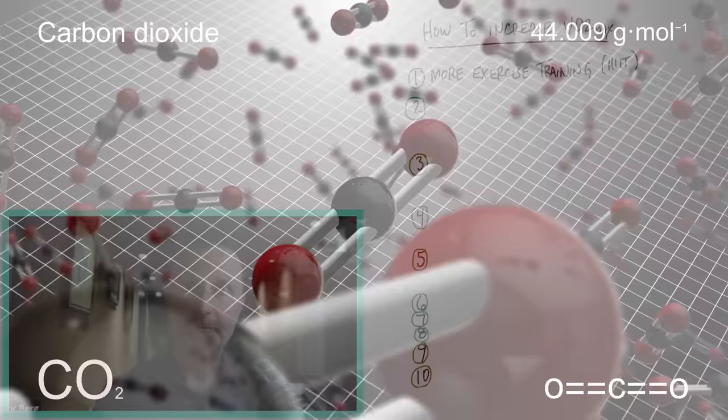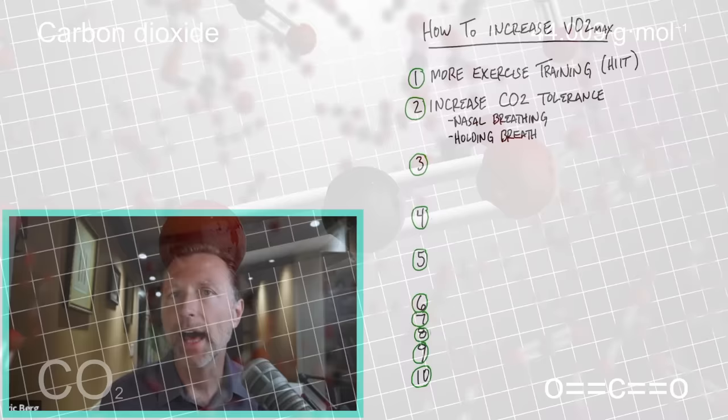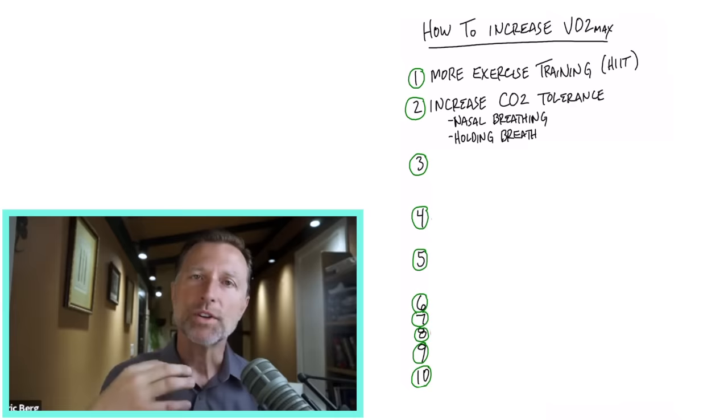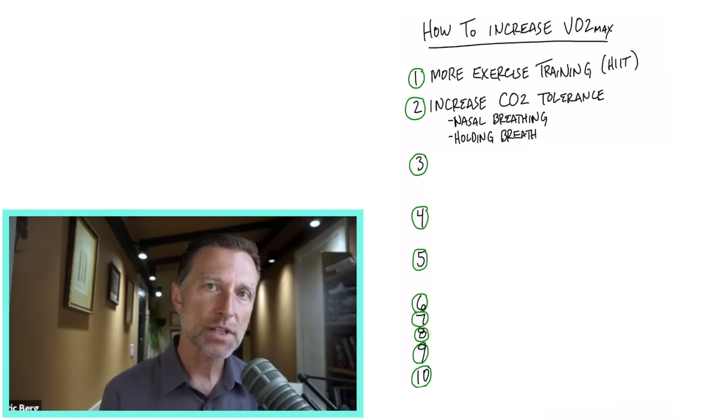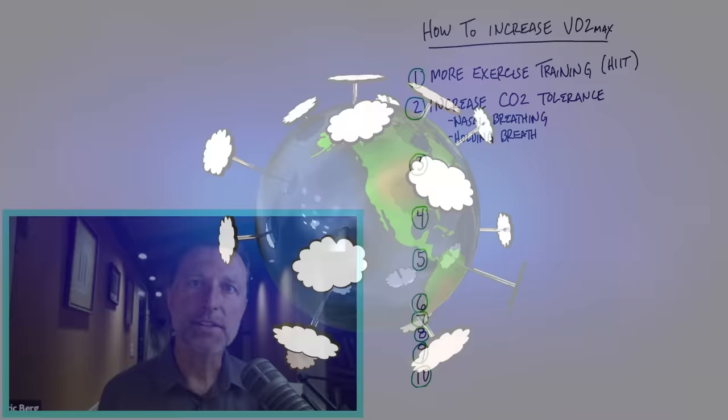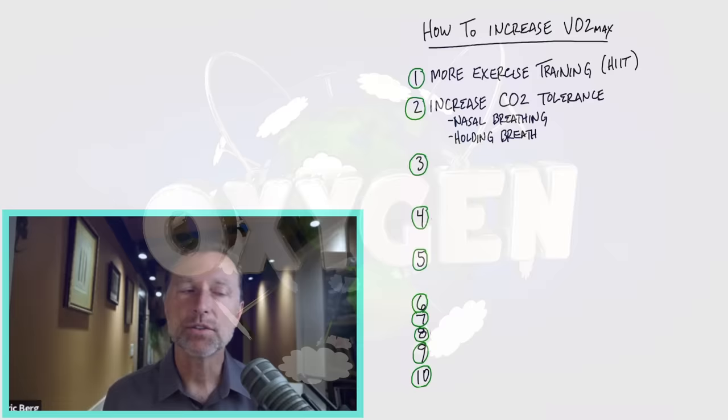So number two, increasing our CO2 tolerance. That can increase our VO2 max. So we can do that with nasal breathing, because when we restrict air through our sinuses, we increase more CO2, which actually helps increase more oxygen. We need the CO2 to alter the pH just slightly to acidify and allow the oxygen to be released. This is why there's so many complications with just pure oxygen itself. And to increase CO2 tolerance, you can also do various exercises holding your breath.